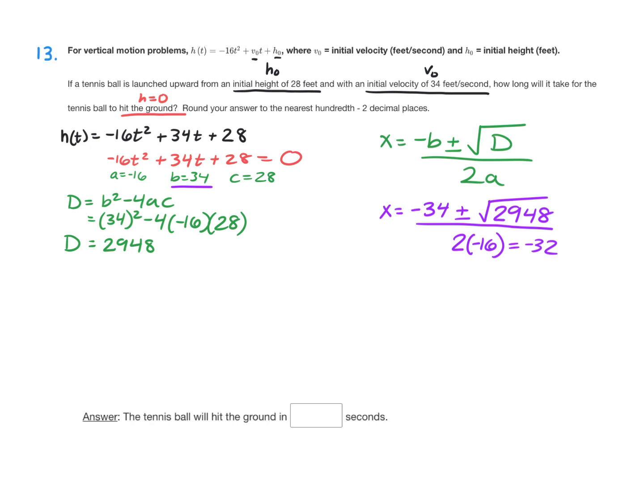So now to get our two answers. For the first answer, we're going to do negative 34 plus the square root of 2,948. Put that in parentheses and then divide it by negative 32. And you can type that whole thing in your calculator just like how I wrote it right there. And when I just type that one in, I got negative 0.63. So that answer there doesn't make sense because a time can't be negative.